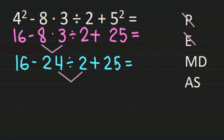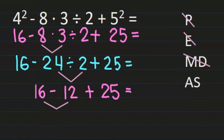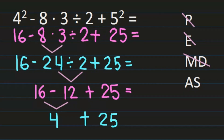24 divided by 2 is 12. Bringing down the rest of my problem, making sure the signs are in the right place — noticing that I am subtracting the 12. Now I don't see any more multiplication and division, so I'm on addition and subtraction, starting on the left with 16 minus 12, which is 4. The last step is 4 plus 25, and 4 plus 25 equals 29.